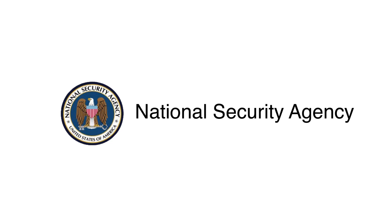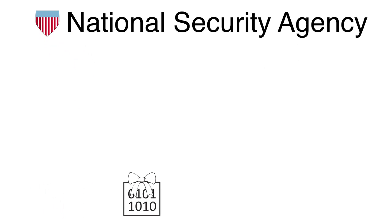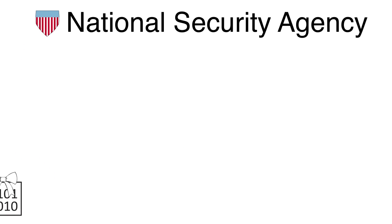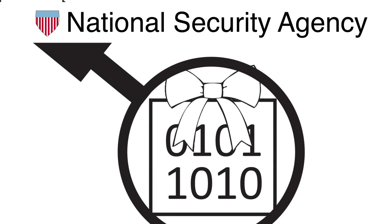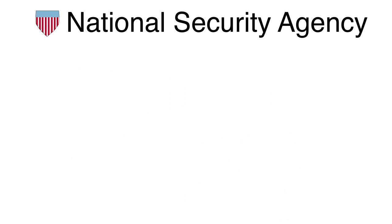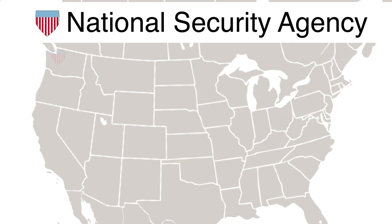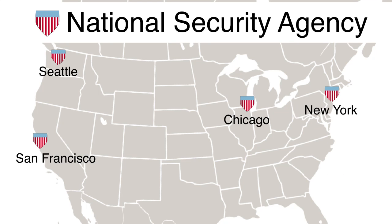Furthermore, the National Security Agency has installed surveillance equipment in the major US centers of internet routing — equipment that is capable of intercepting all the traffic passing through them. These NSA centers include the main cities that Canadian boomerang traffic passes through before returning to Canada: Seattle, San Francisco, Chicago, and New York.